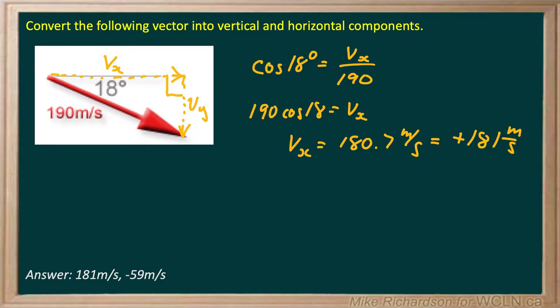Now, let's look at vy. Now, vy is opposite to the angle, and we know the hypotenuse, so let's use sine. So, sine theta, which is 18 degrees, is opposite, vy, over 190, over hypotenuse. Multiply both sides by 190.